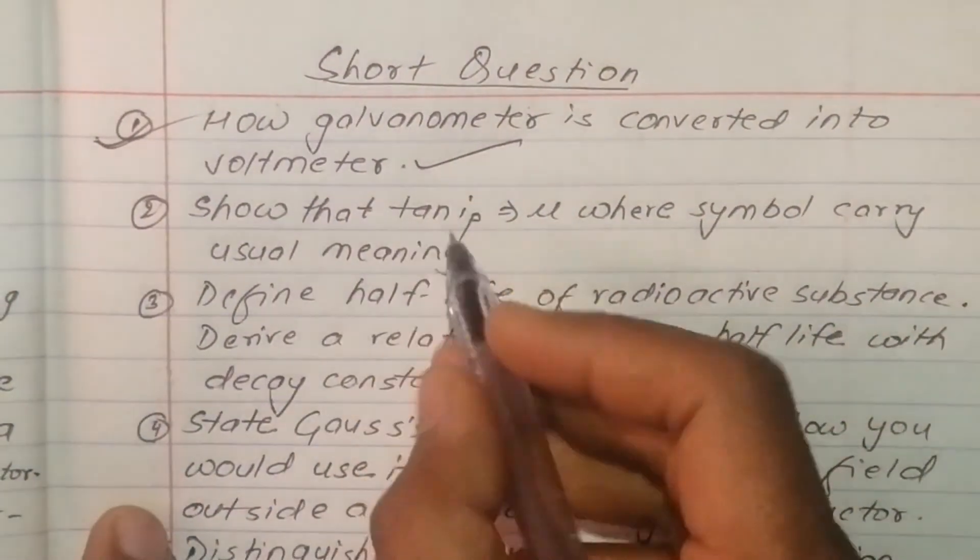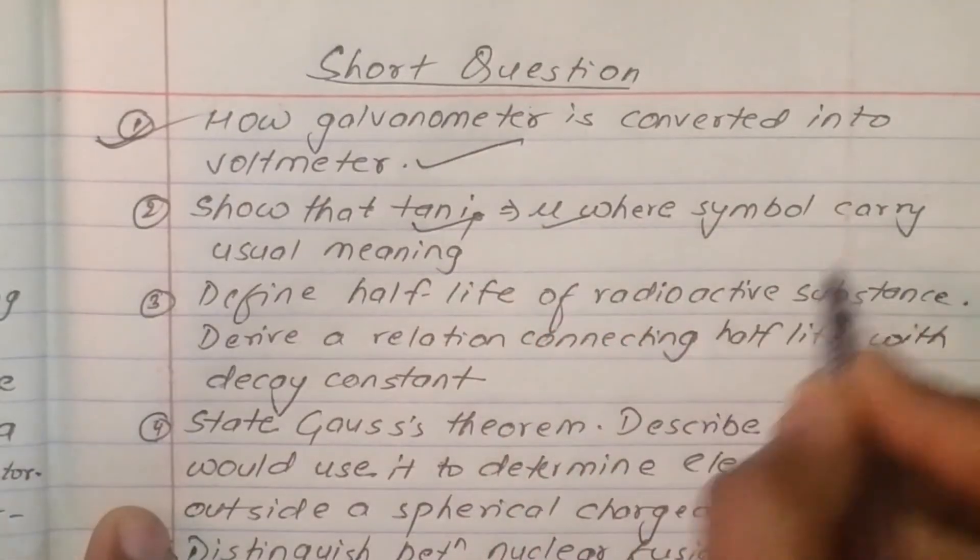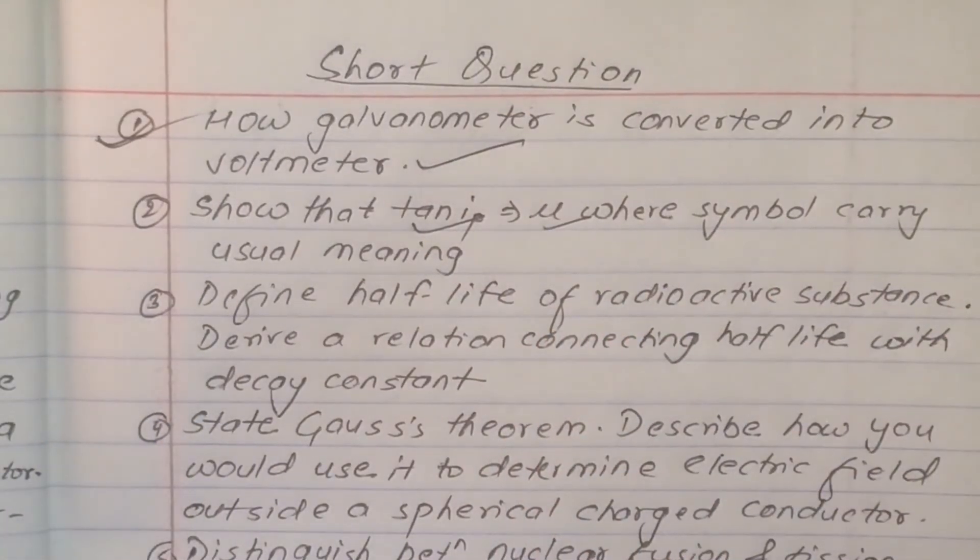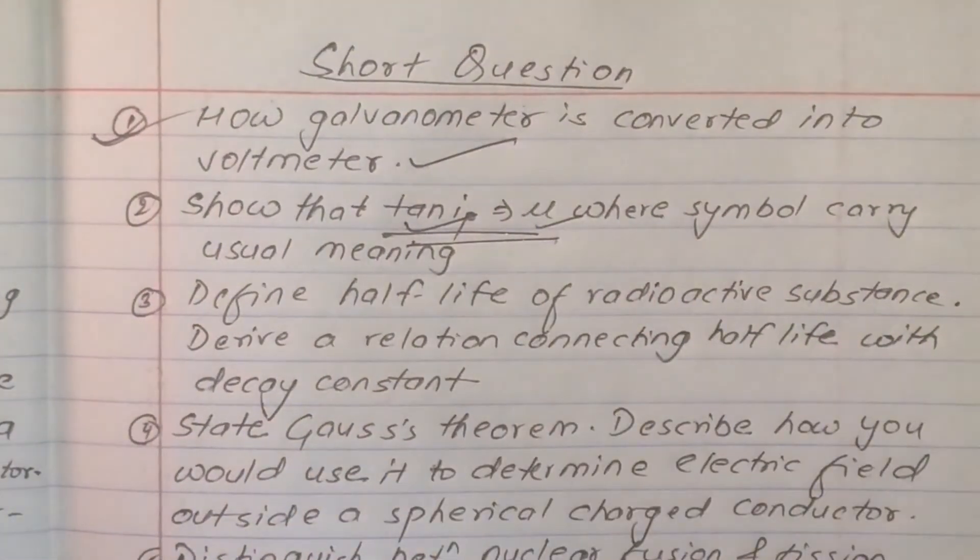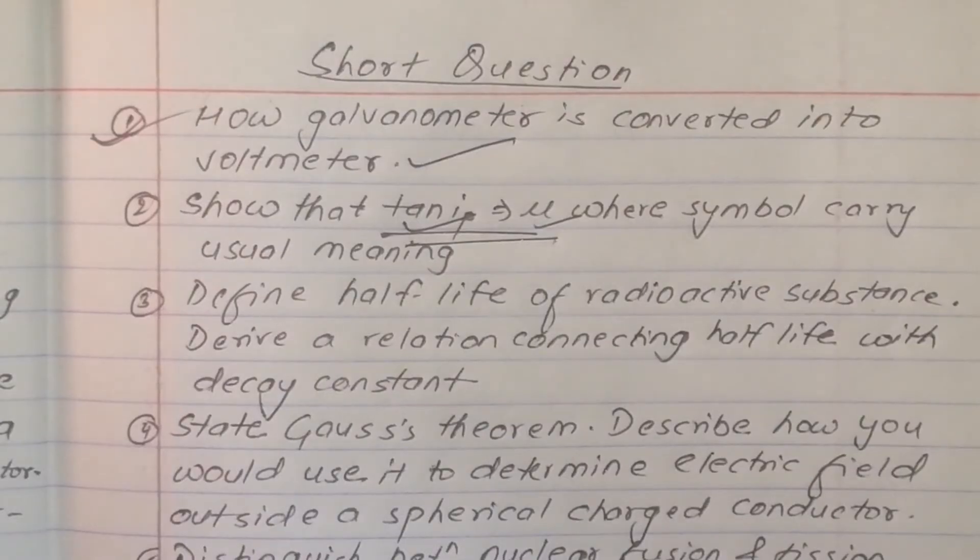Show that tan i_p is equal to mu where symbols carry their usual meaning. It is a long question.